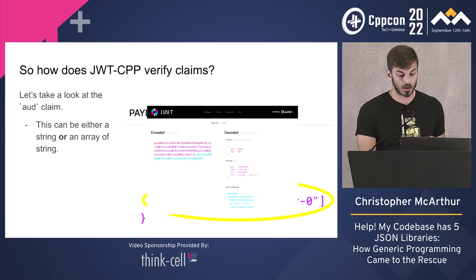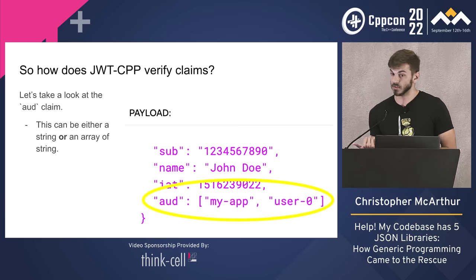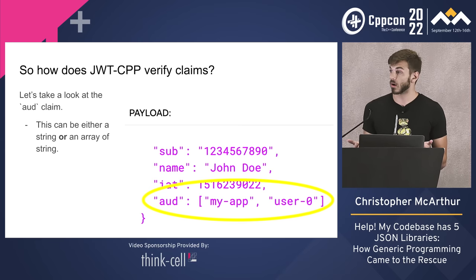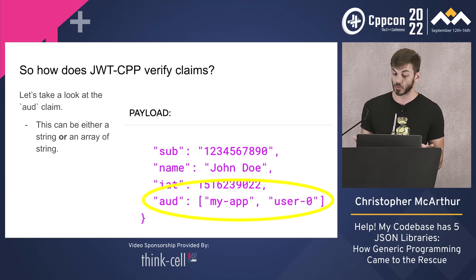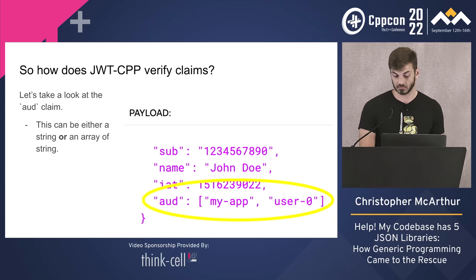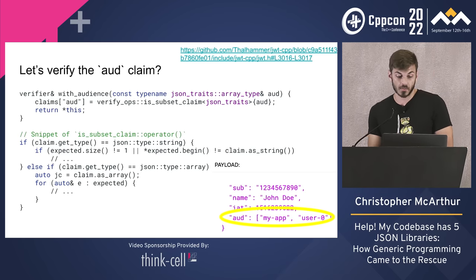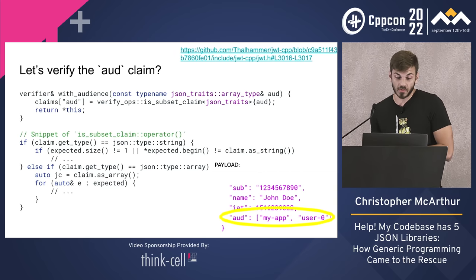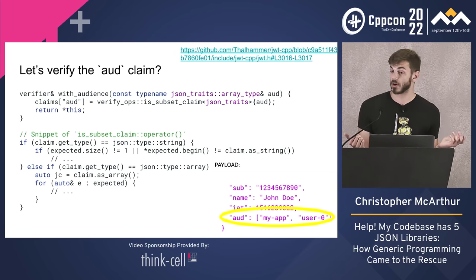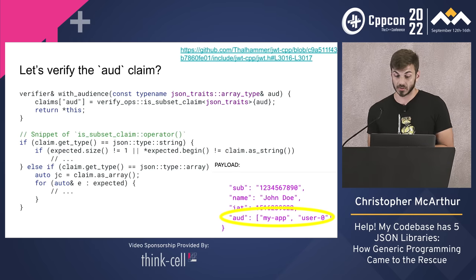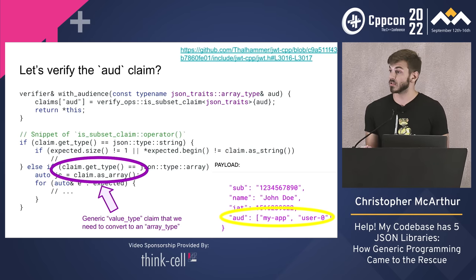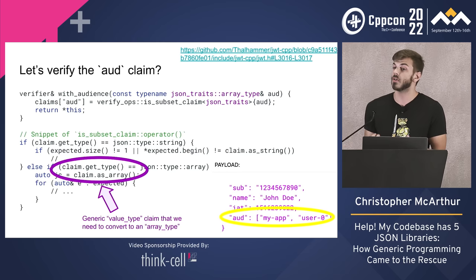If we look at a specific claim — in this case, our audience — there can be either a string or an array of strings; that's what the spec defines. In this example we have an array: 'my app' and 'user zero'. If we wanted to verify that claim, you can see in the snippet we have: if claim type is string, and another which is get type as array. So there are functions we need to implement, and our traits need to define what these are so we know how to work with that specific JSON library.